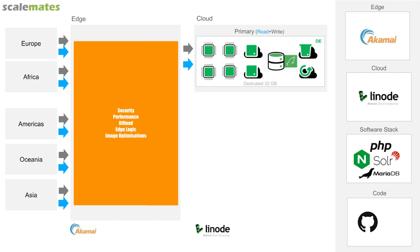My traffic is global, coming from everywhere. I have the Akamai platform in front of me for security, performance, caching, edge logic, and image optimization. Ideally everything was served from cache. If not — due to a cache miss or dynamic content — requests would go back to Germany.